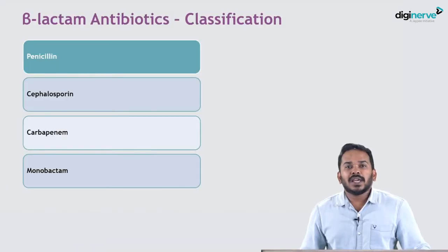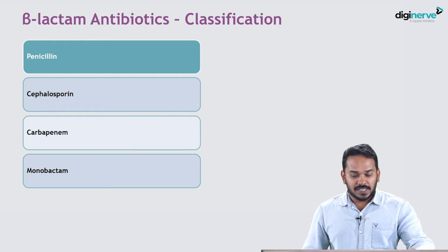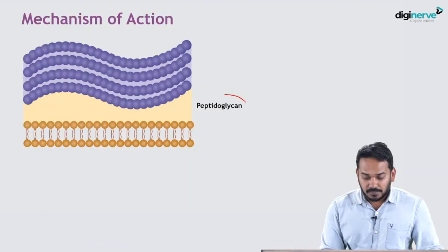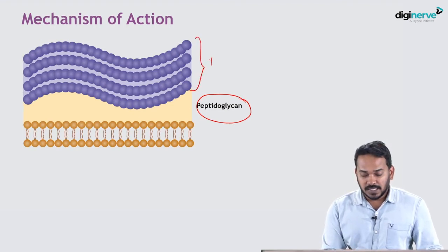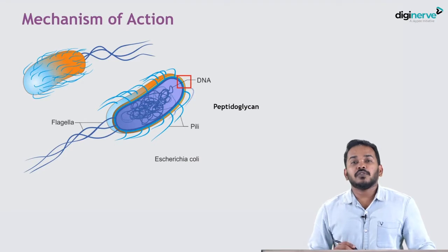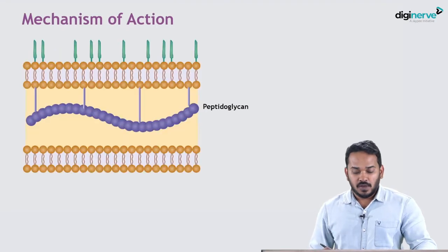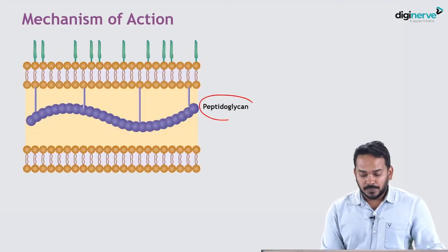Let's do a quick recap on the mechanism of action of beta-lactam antibiotics. Gram-positive organisms contain peptidoglycan in their cell wall and the peptidoglycan layer in gram-positive organisms is thick. Gram-negative organisms also contain peptidoglycan but the peptidoglycan in gram-negative organisms is thin.